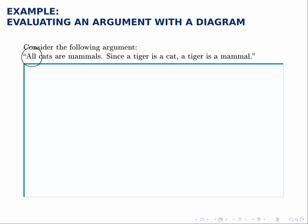We drew diagrams for a universal quantifier earlier and it looked like this. We had mammals on the outside and then the 'all' part goes inside, so here we have cats inside.